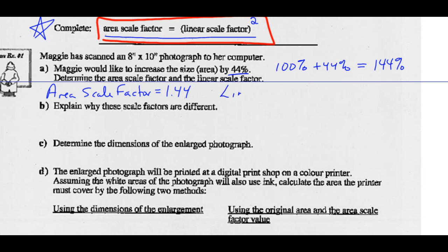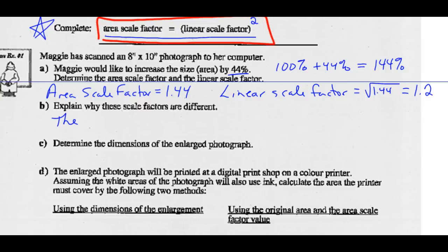If I want to find the linear scale factor, according to what we established — if I square the linear scale factor I get the area scale factor — then if I want to figure out the linear scale factor given the area scale factor, I should take the square root of that. So the square root of 1.44 is 1.2. That's our linear scale factor. Explain why these scale factors are different: the area scale factor is the linear scale factor squared, so they're not equal — that's why they're different.